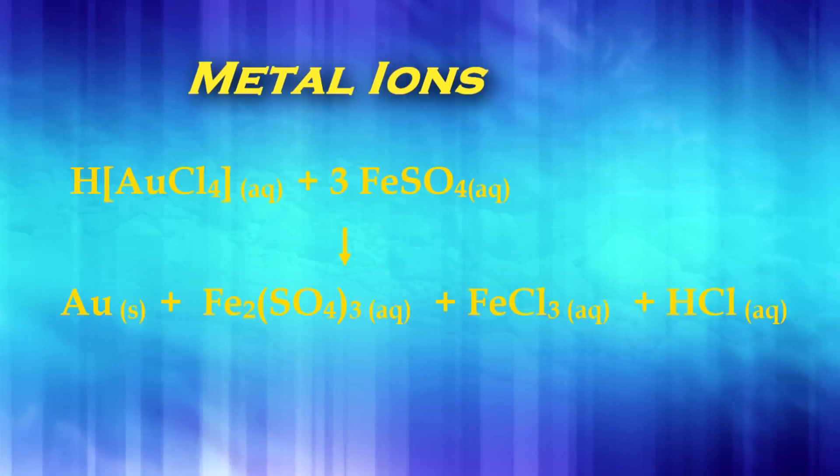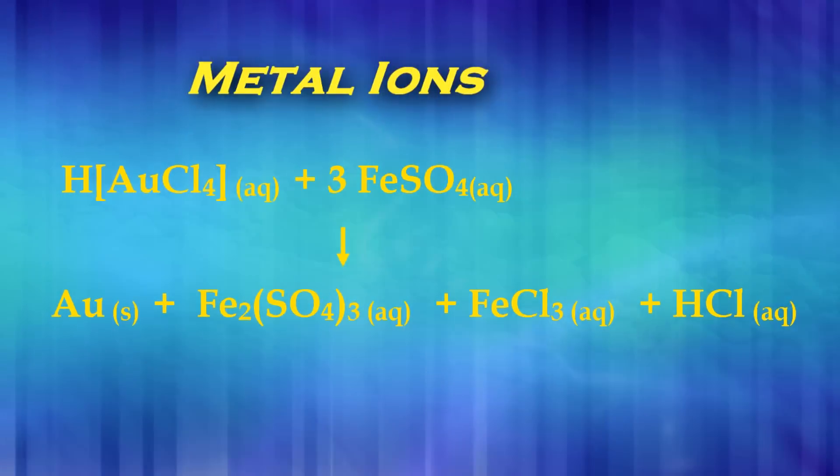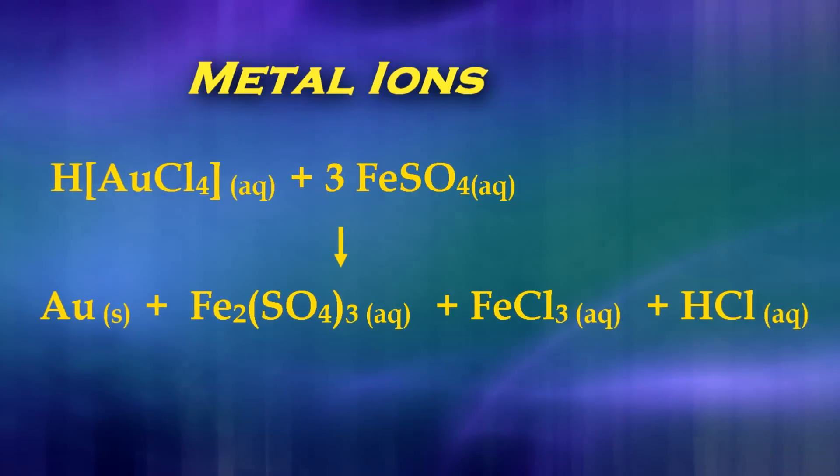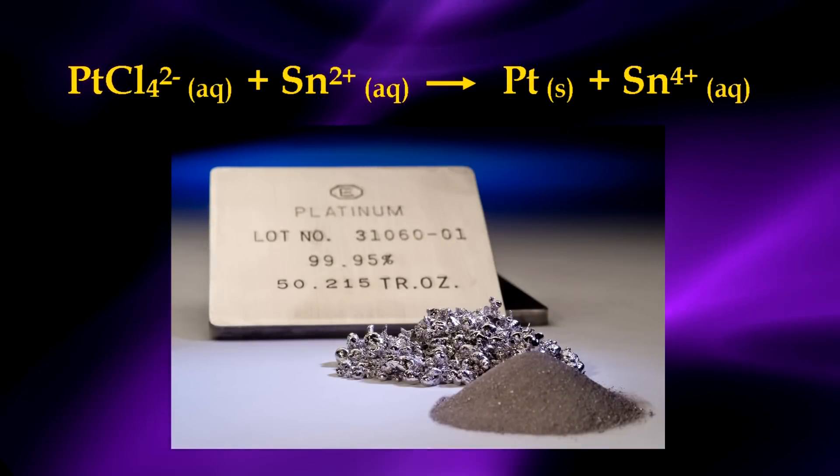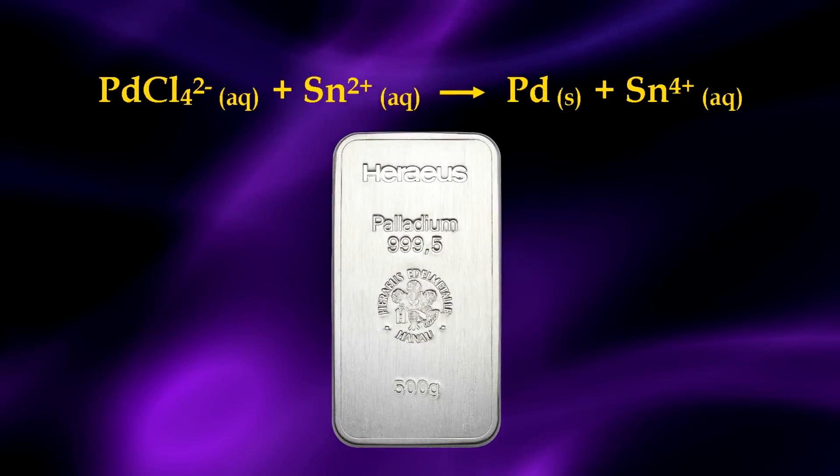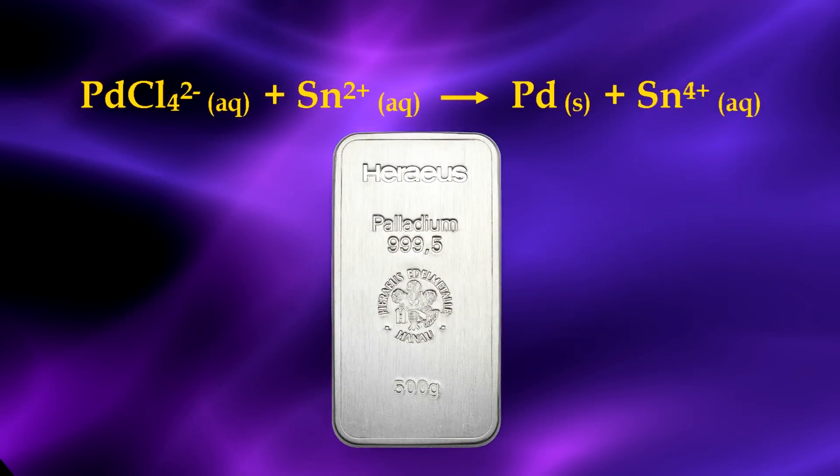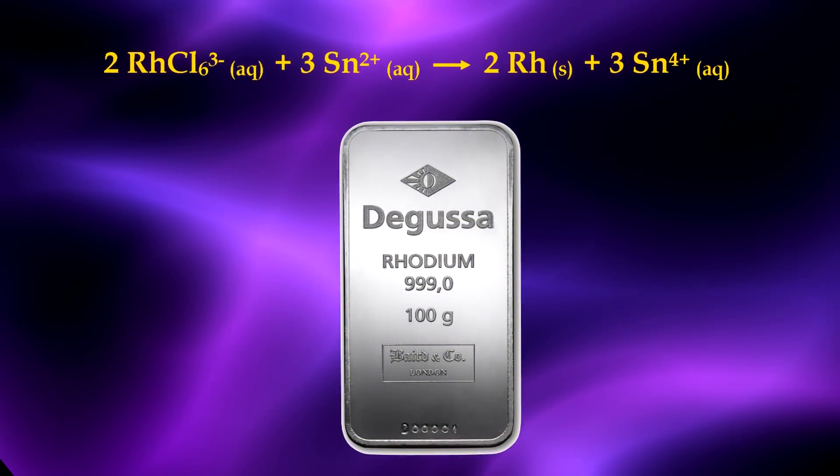Metal ions in aqueous solutions are also used to reduce precious metals to their metallic state. Here are examples using tin in the plus-two state, which will give up two electrons to convert to the plus-four ionic state. The precious metal ions receive these electrons and cement out as solids.